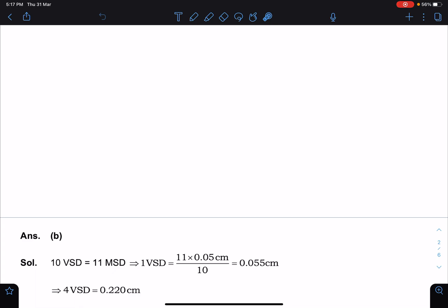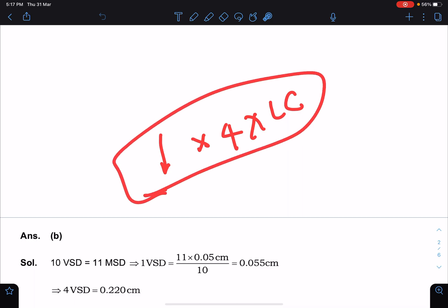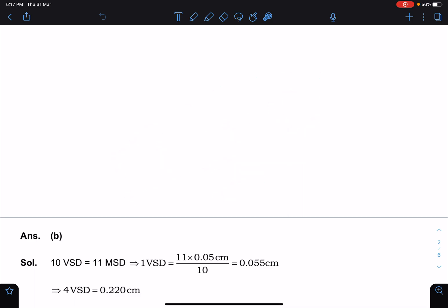Now the thing is, since it is a modified vernier, we cannot write it as that lower reading times four times least count. This is not going to be valid in this problem.